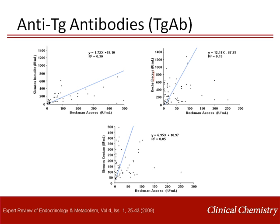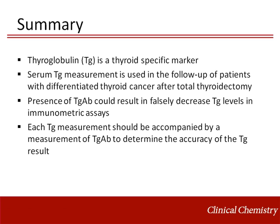To summarize, thyroglobulin is a thyroid-specific marker that has become a standard of practice in the follow-up of patients with differentiated thyroid cancer after total thyroidectomy. As a tumor marker, thyroglobulin lacks specificity since it could be upregulated in benign thyroid diseases and, as such, should not be used in the initial diagnosis of thyroid cancer. The presence of thyroglobulin autoantibodies in up to 30% of thyroid cancer patients is problematic as they interfere in the thyroglobulin immunometric assays. It is very important that each thyroglobulin measurement has a thyroglobulin autoantibody value associated with it to determine the accuracy of the result. If thyroglobulin autoantibodies are present, then the clinician should be alerted to recognize that the thyroglobulin result might be unreliable, especially if the value is undetectable.